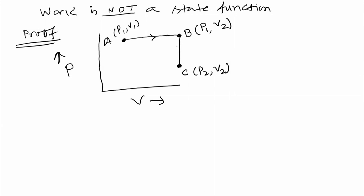We can go from point A to point C via two different paths. Path 1: first reach point B from A by keeping pressure fixed and increasing volume from V1 to V2, then change pressure at constant volume. Path 2: first keep volume fixed at V1 and decrease pressure from P1 to P2 reaching point D, then increase volume at constant pressure P2 from V1 to V2.